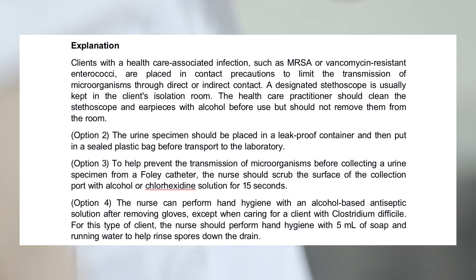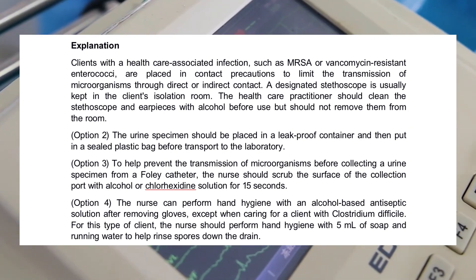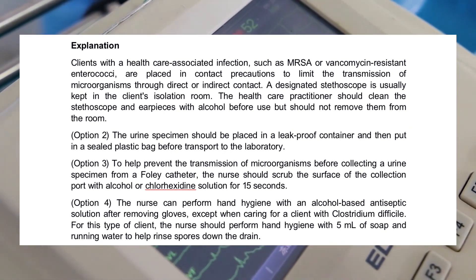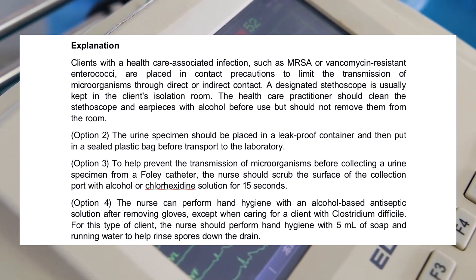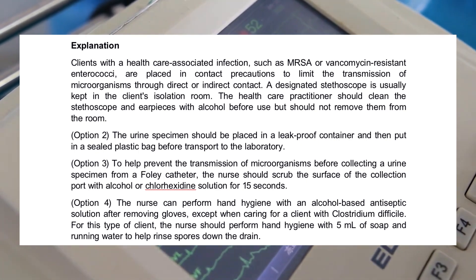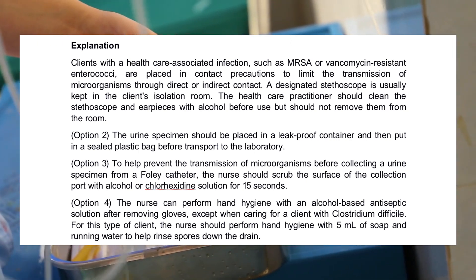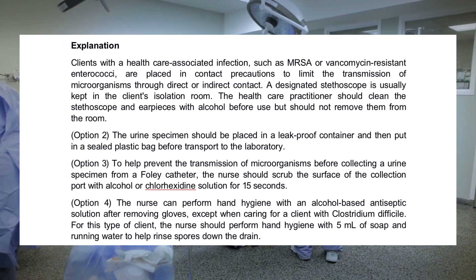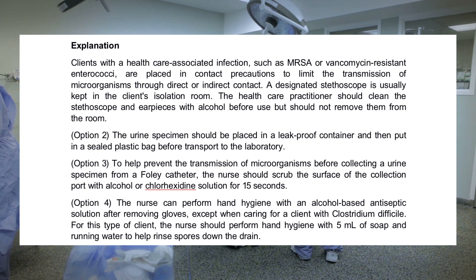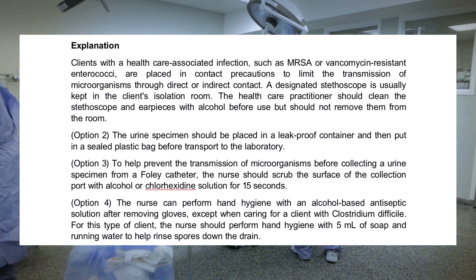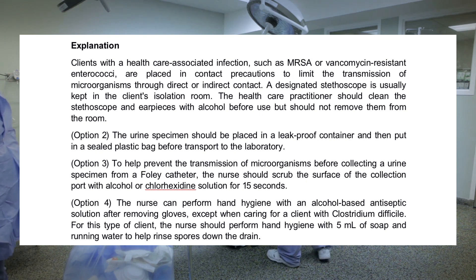Option 2: The urine specimen should be placed in a leak-proof container and then put in a sealed plastic bag before transport to the laboratory. Option 3: To help prevent the transmission of microorganisms before collecting a urine specimen from a Foley catheter, the nurse should scrub the surface of the collection port with alcohol or chlorhexidine solution for 15 seconds. Option 4: The nurse can perform hand hygiene with an alcohol-based antiseptic solution after removing gloves, except when caring for a client with Clostridium difficile.